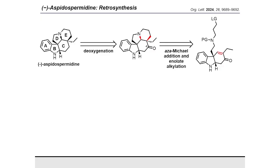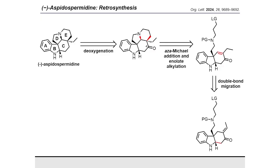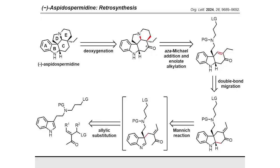The essential endocyclic enone functionality should arise from an exo- to endo-double bond migration from the exocyclic enone. The exoenone would be obtained from the key anti-selective allylic substitution reaction between a tryptamine derivative and an allylic substrate precursor, followed by trapping of the generated iminium ion in a Mannich reaction. Notably, the key allylic substitution reaction should not only construct the stereo-dictating quaternary carbon stereocenter, but also assemble the entire framework of aspidospermine.